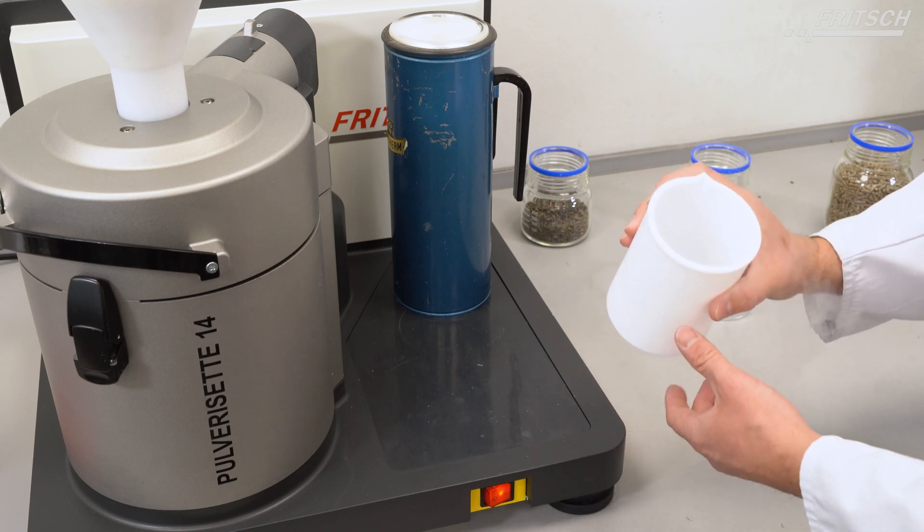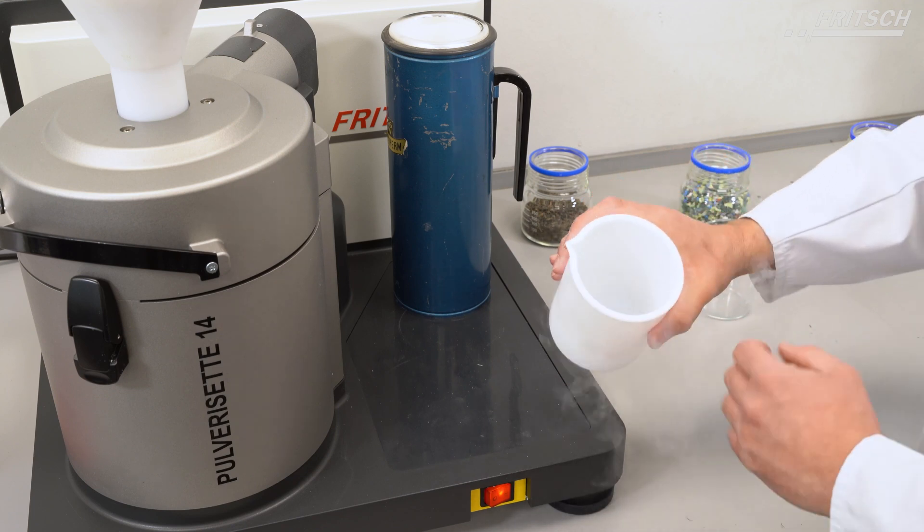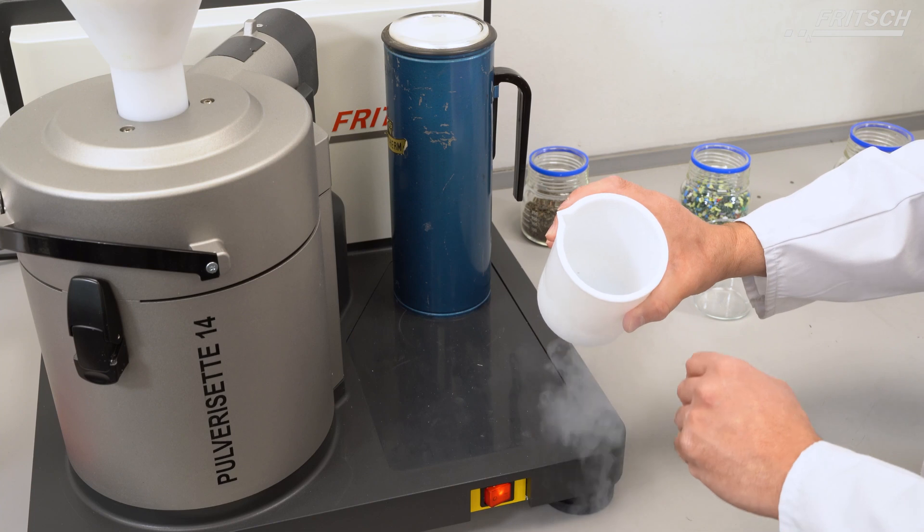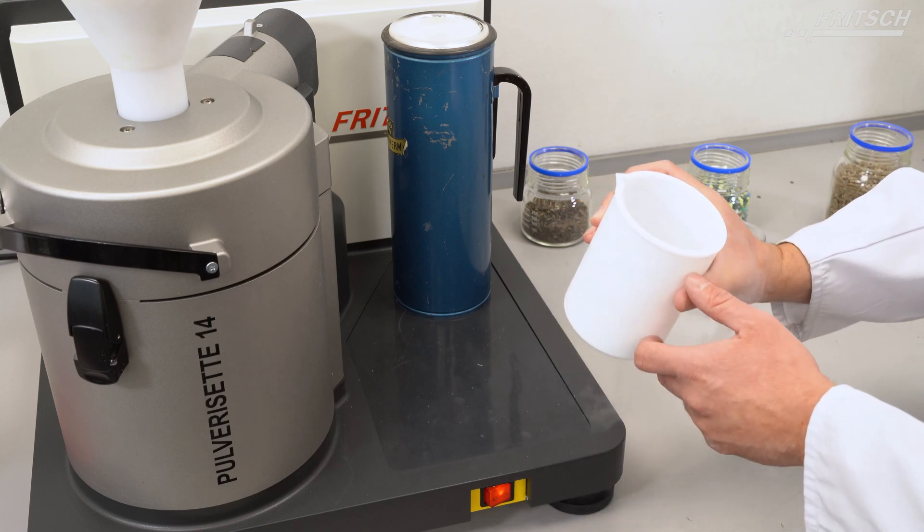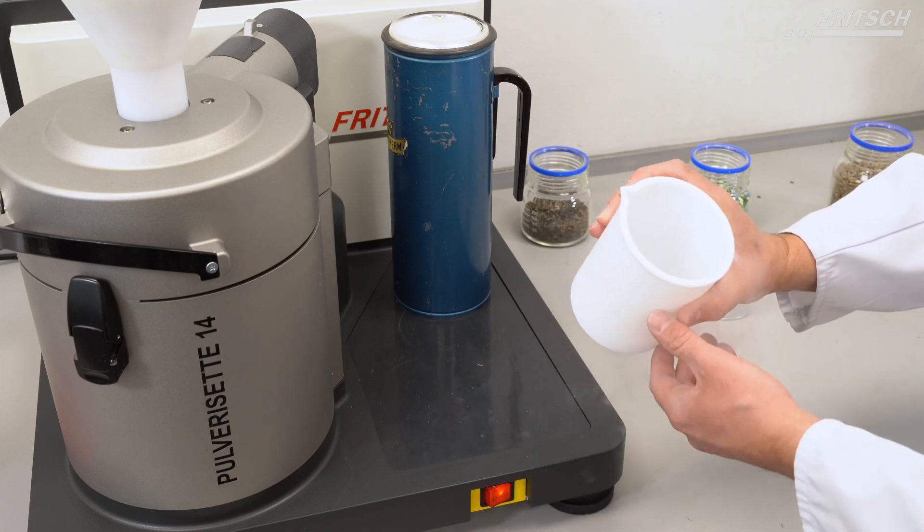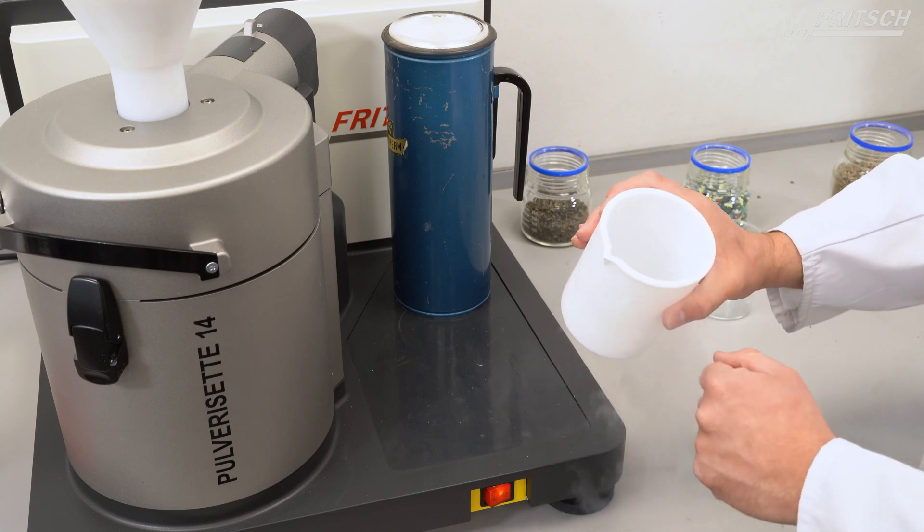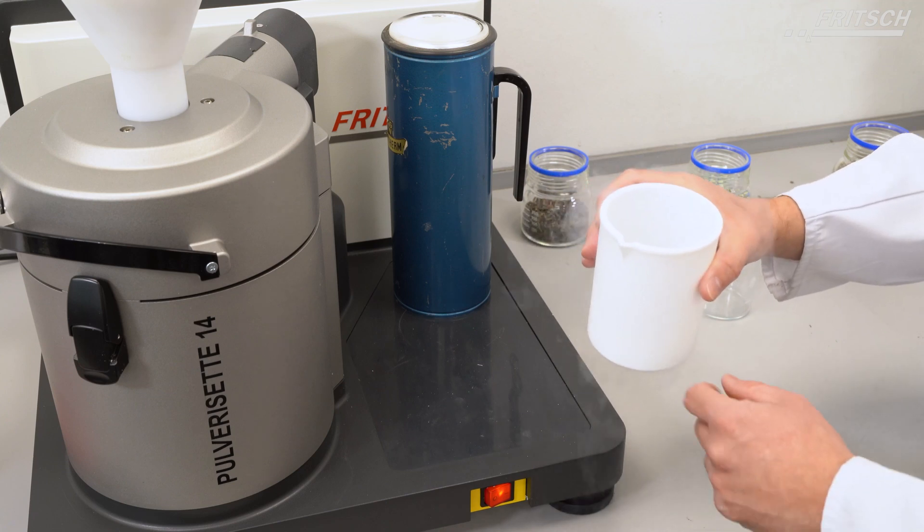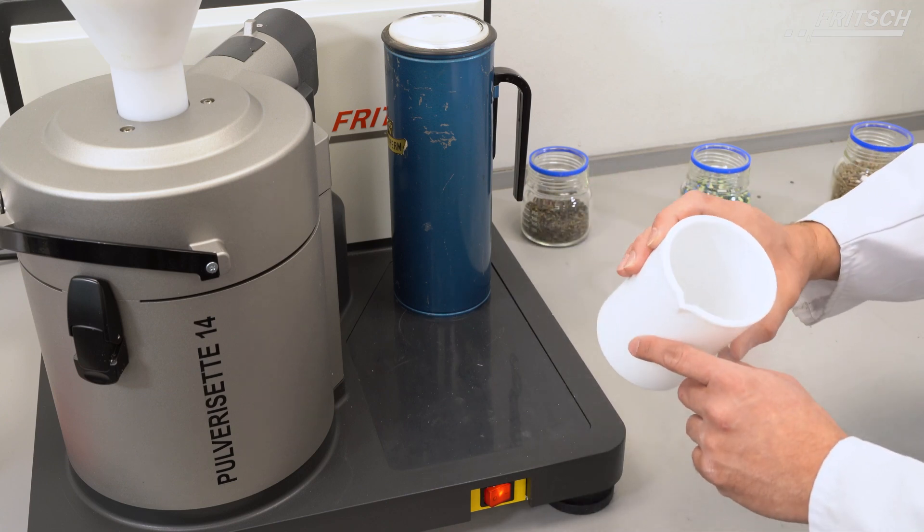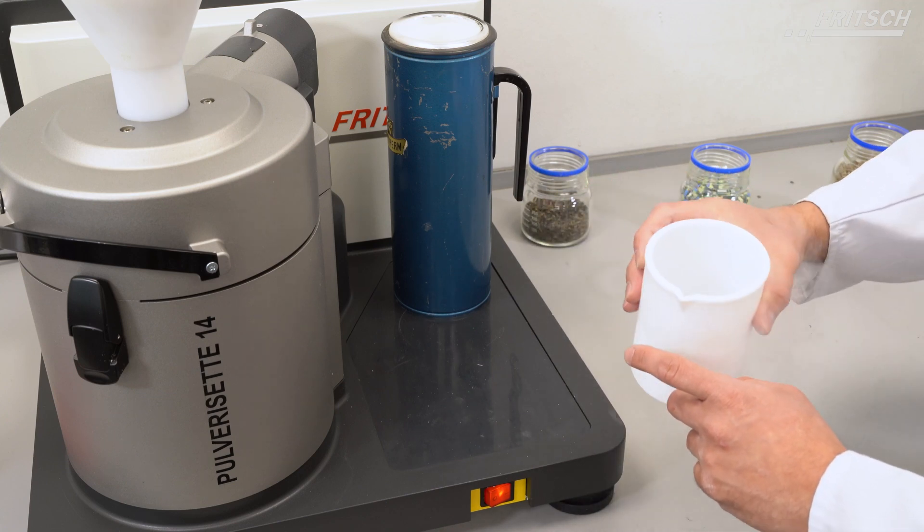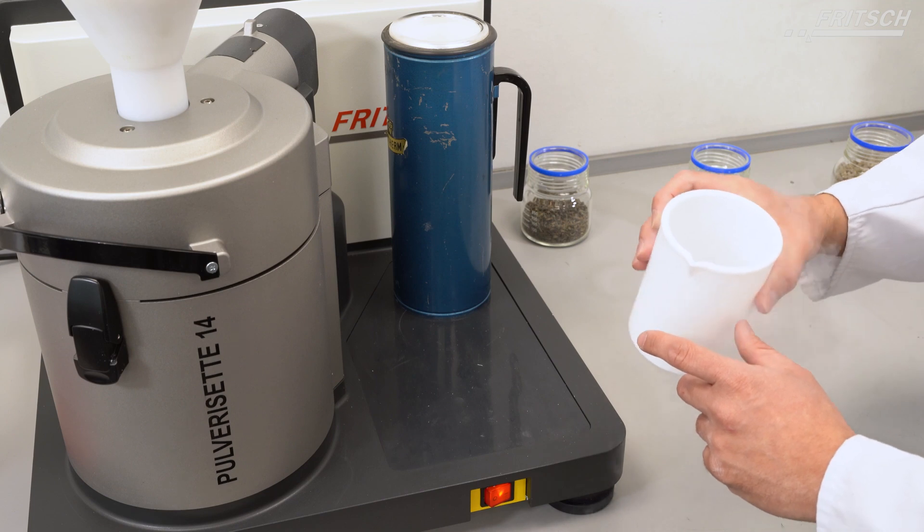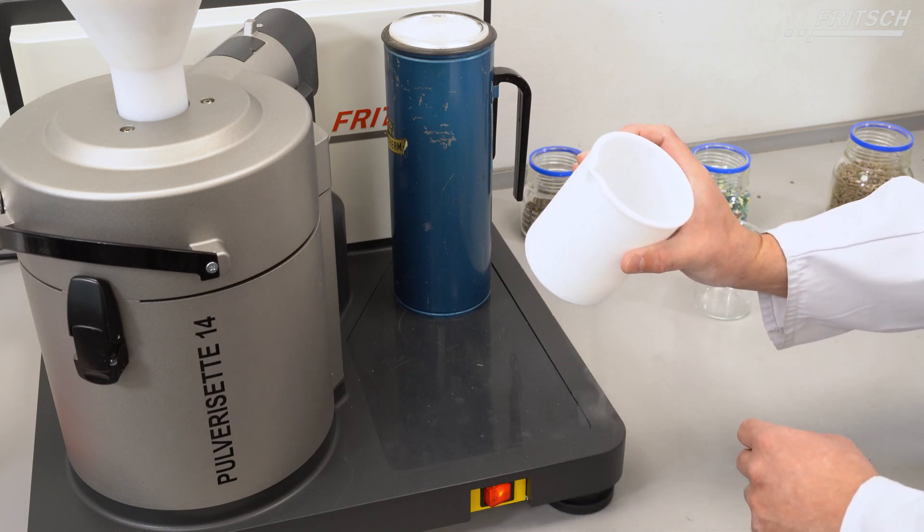For the grinding step it is very important that the whole rest of liquid nitrogen is evaporated and no rest of liquid nitrogen is in this vessel. Any residue of the liquid nitrogen which will be transferred to the mill for the grinding process might lead to an explosion.